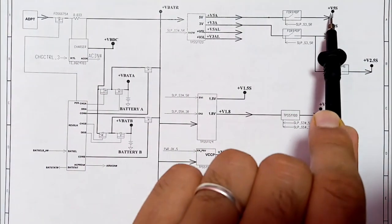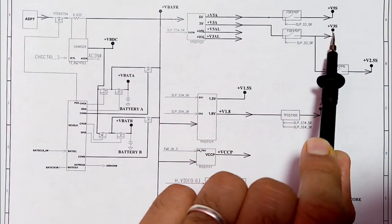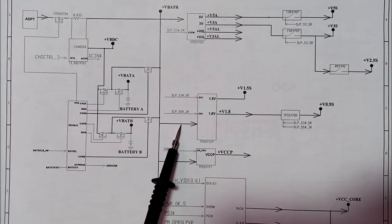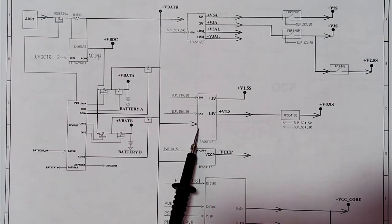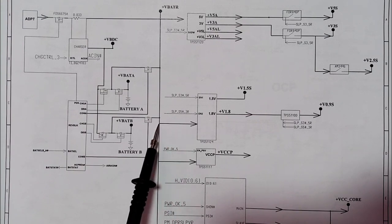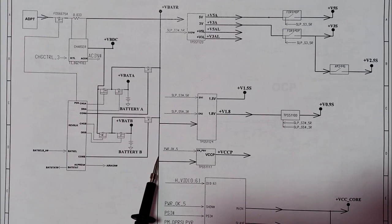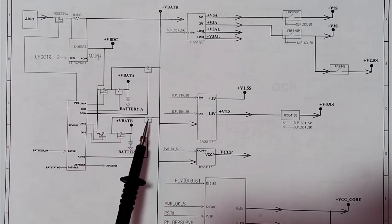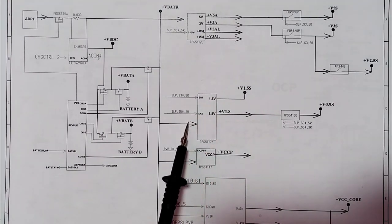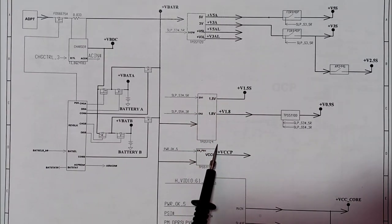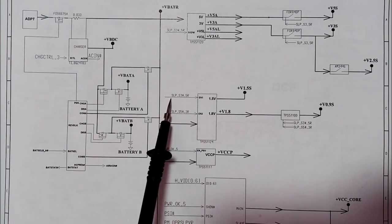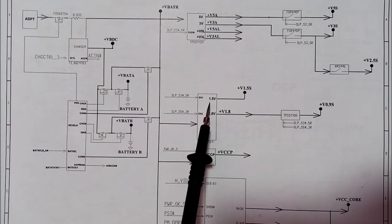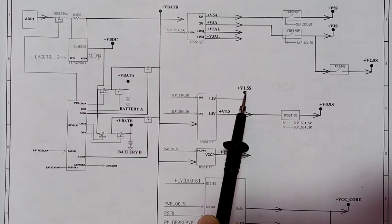From that control IC we get plus 5 volt and plus 3 volt. The 19 volt is also applied to the 1.8 volt and 1.5 volt control IC. The bolded lines mean 19 volt — a high voltage, high trace — and the thin lines mean enable signals. The 19 volt will be applied to IC TPS51124, along with enable one and enable two signals, and then the IC generates 1.5 volt and 1.8 volt.